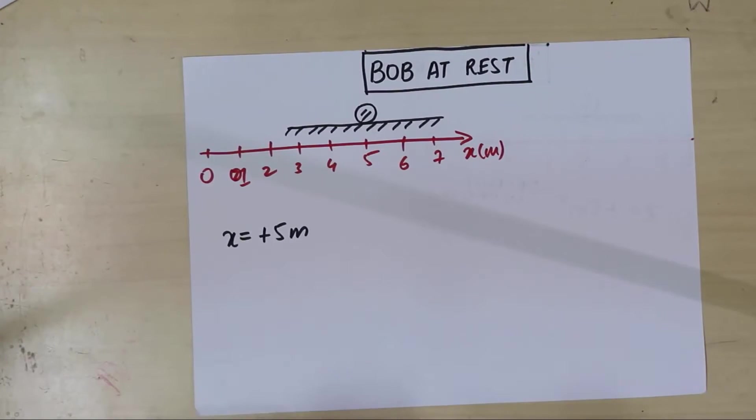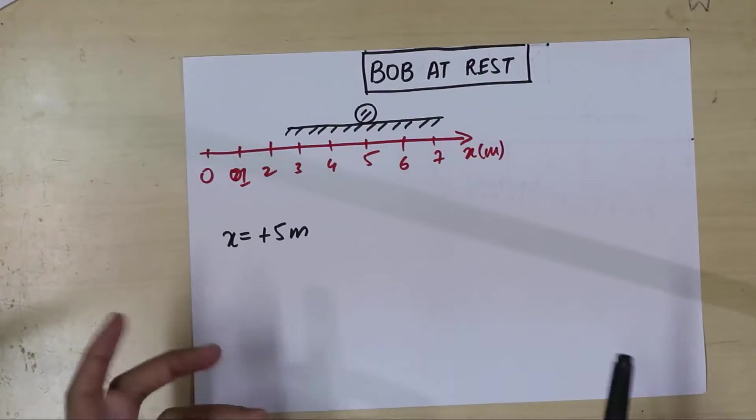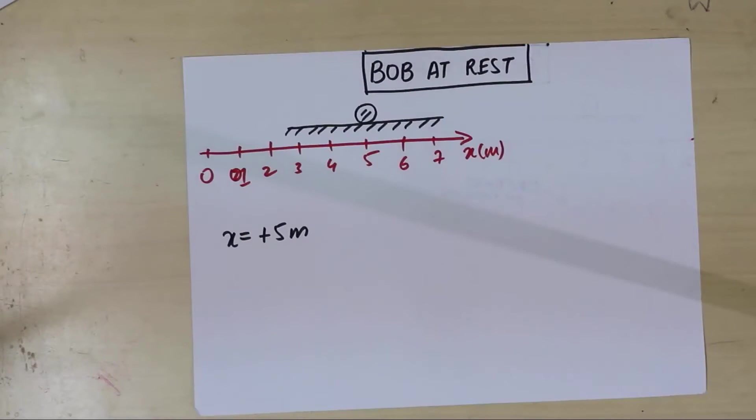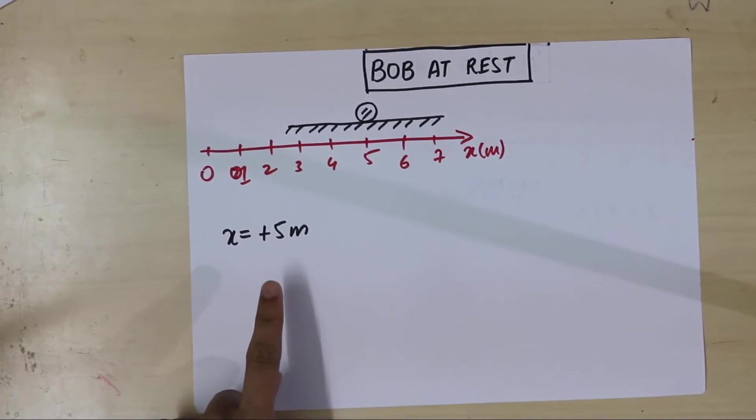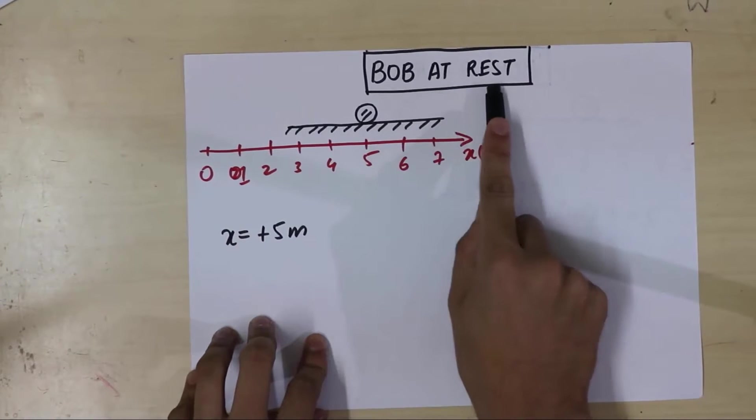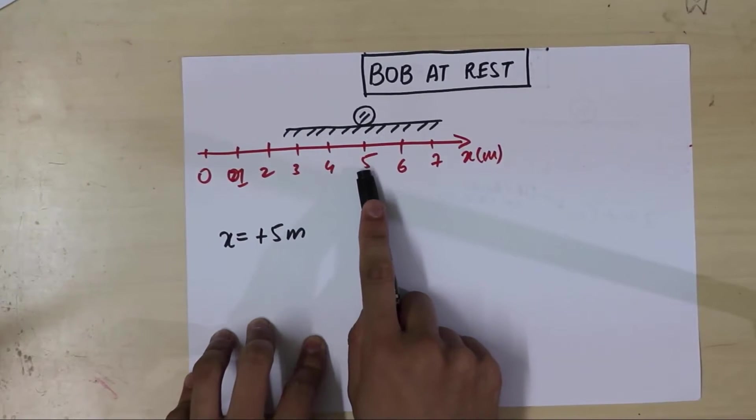You may say, is that an equation? Well, yes. That is an equation. It's one of the simplest equations. Our first equation, by the way. Congratulations! In kinematics. And this simple equation is just telling that Bob is at rest at 5 meters.